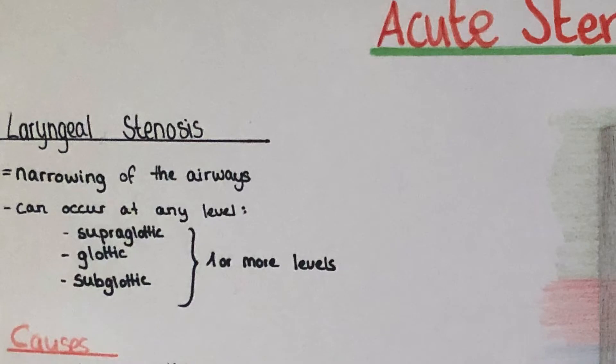Now we're going to talk about laryngostenosis. It is the narrowing of the airways and it can occur at any level from the epiglottis down to the trachea. If the narrowing is at the vocal cords then we speak about a glottic stenosis. If it's a narrowing below the vocal cords then it's a subglottic stenosis. A narrowing can also involve one or more levels of the larynx.